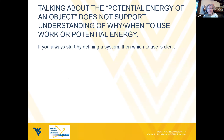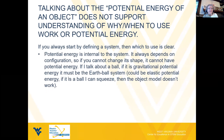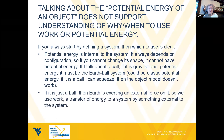What we found anecdotally in my own teaching is that if I start by defining a system, then which concept to use is always clear. Potential energy is internal to the system—it always depends on configuration, so if you can't change the shape, it can't have potential energy. If I talk about a ball, it's not going to have gravitational potential energy unless I'm talking about a ball-Earth system, where I can change the shape of where the ball is with respect to the Earth. If it's just the ball, then the Earth is exerting an external force on it, so we use the concept of work—a transfer of energy to the system by something external to the system.